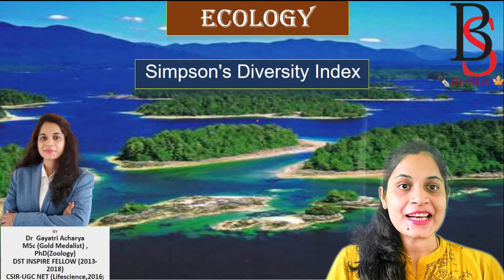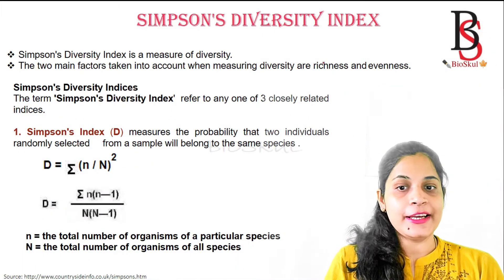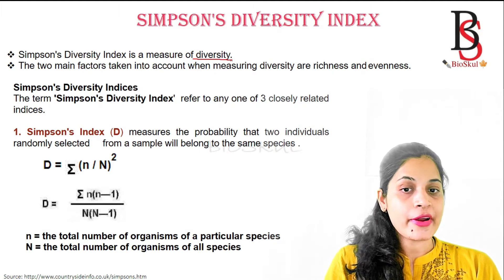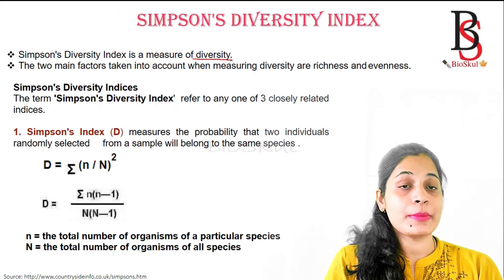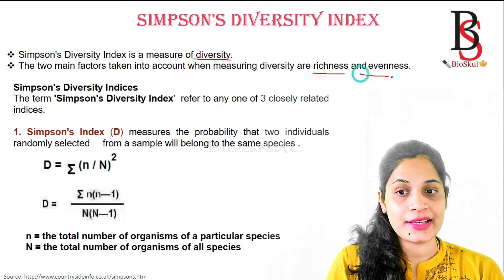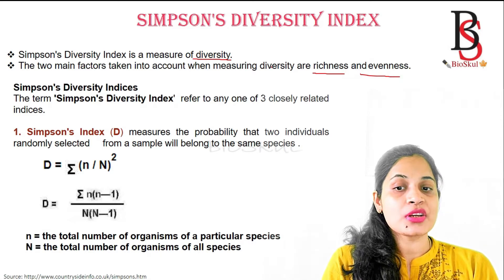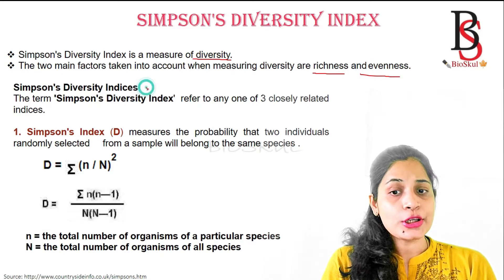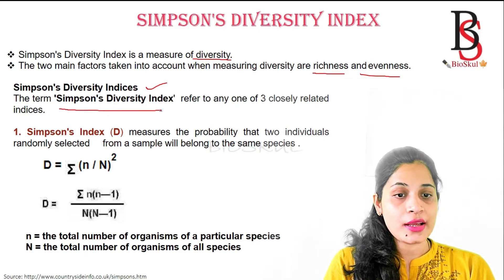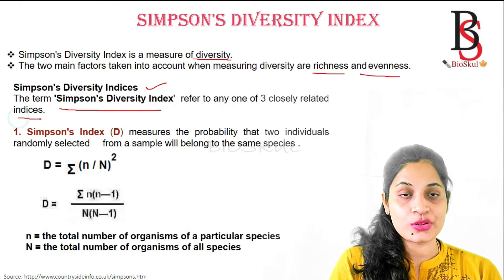Let's get started. Simpson's Diversity Index measures diversity. The two main factors taken into account while measuring diversity are species richness and species evenness. The term Simpson's Diversity Index refers to any of three closely related indices, which we are going to look at.